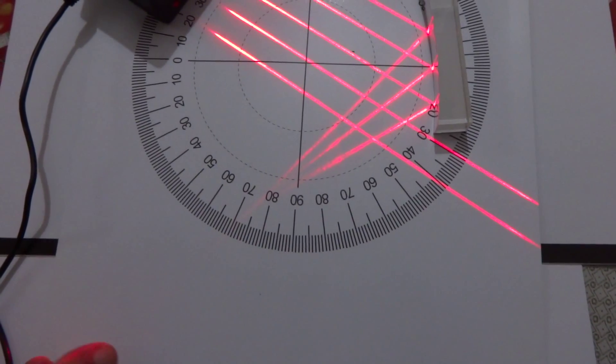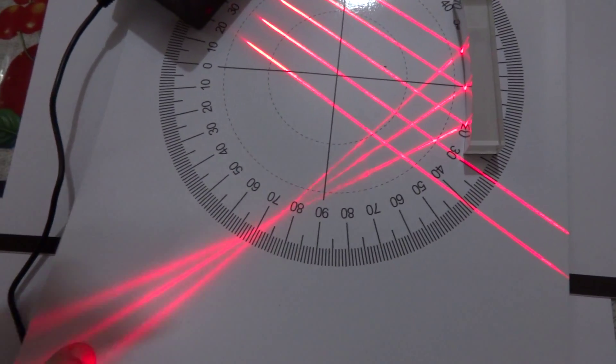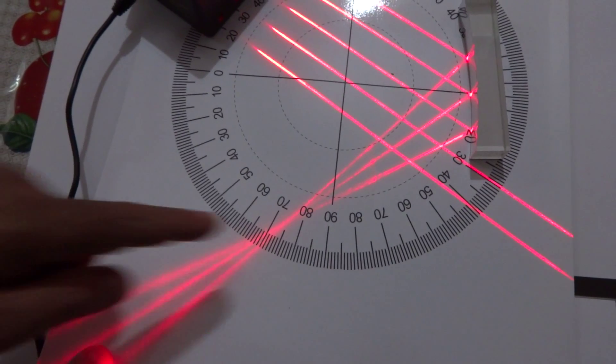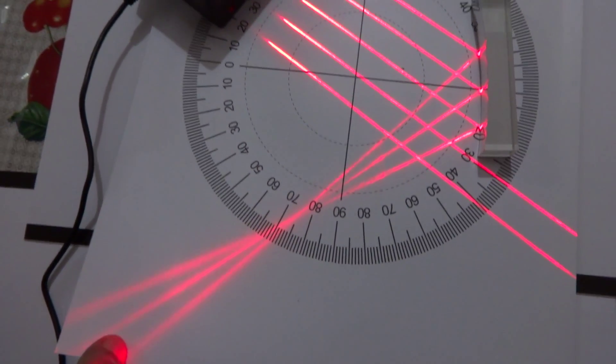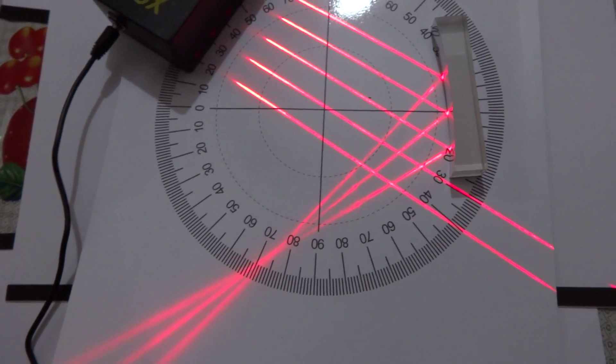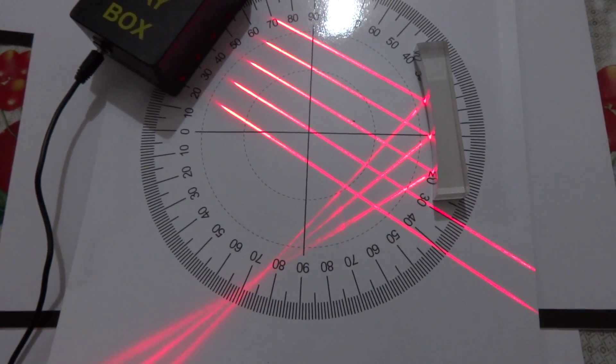Concave mirrors will have real focus and convex mirrors will have virtual focus. Concave mirrors give real images because all the rays, after getting reflected, they are meeting at a point. When the rays are meeting at one particular point, that is the focus and it is called real focus.